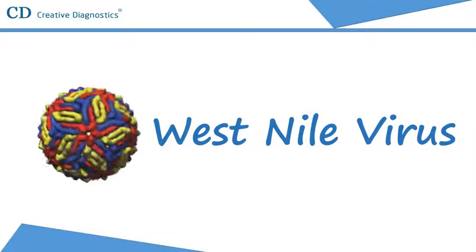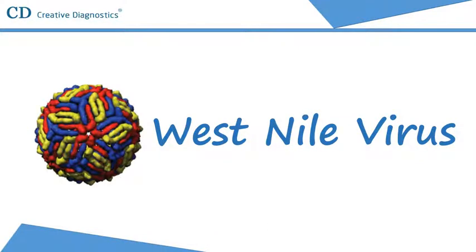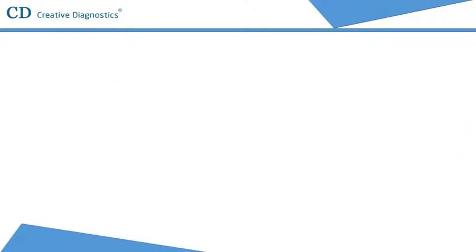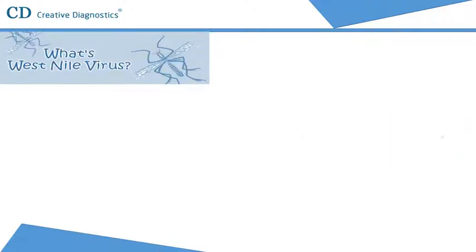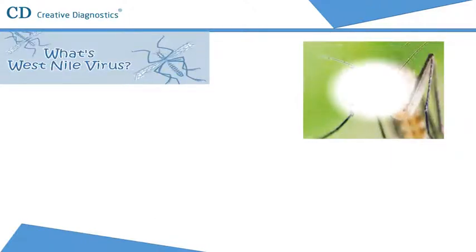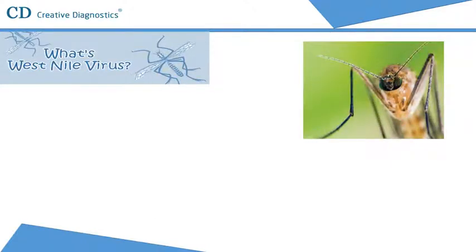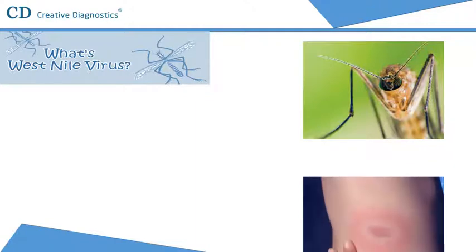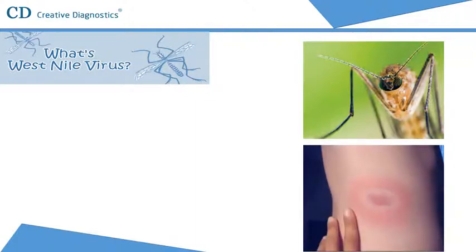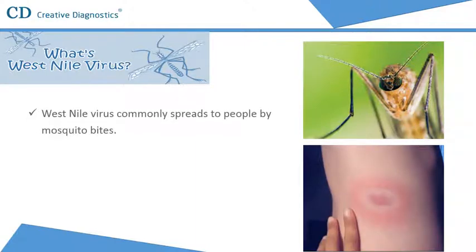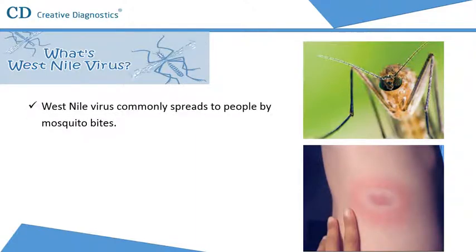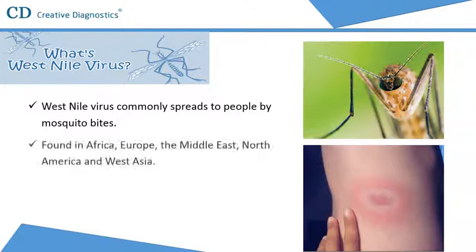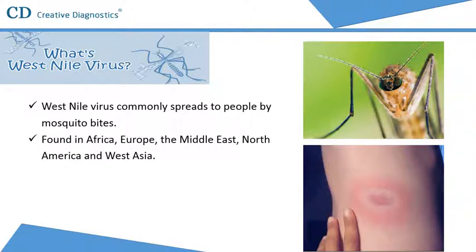This video discusses West Nile virus. West Nile virus commonly spreads to people by mosquito bites and can cause neurological disease and death. West Nile virus is commonly found in Africa, Europe, the Middle East, North America, and West Asia.